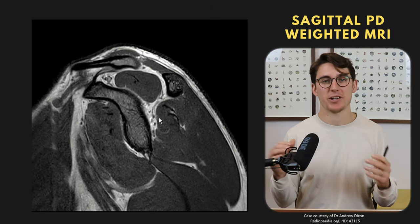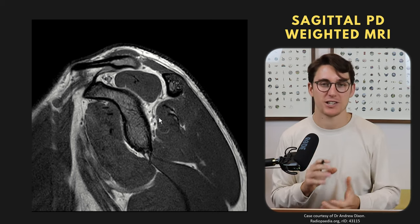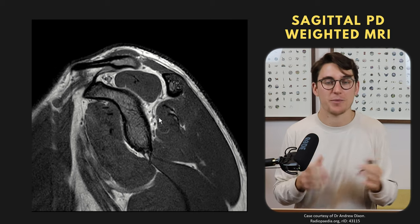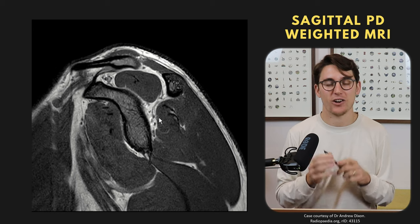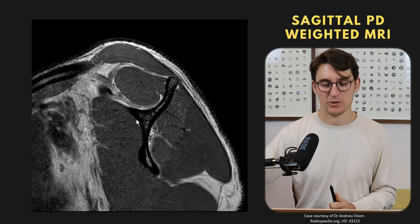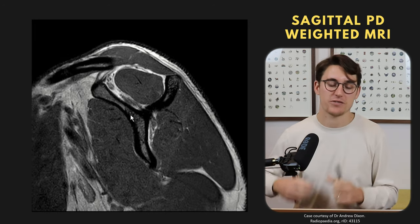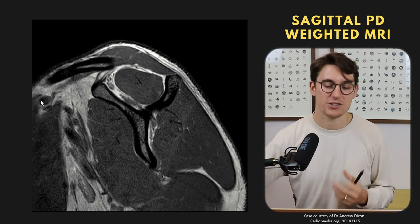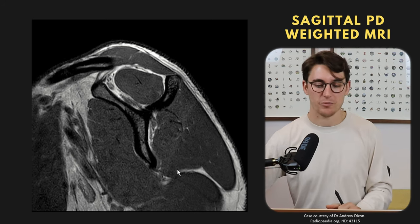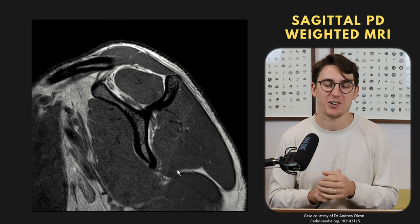To summarize the approach to shoulder MRI: look at the bones, then the ligaments, then the labrum and capsule, then the muscles — going through each systematically. This ensures you don't miss obvious abnormalities. Knowing what's normal is arguably more important than knowing what's abnormal. We've been looking at PD images where fluid and fat are both bright. If you want to differentiate between fluid and fat in a space, fat-saturated images can be used — though the fat here gives nice clear muscle boundaries, making anatomy easier to identify.